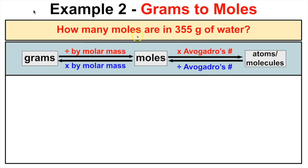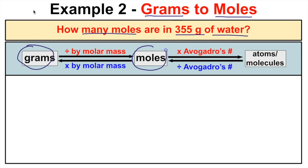In this problem we are going to convert grams to moles. We are asked to figure out how many moles are in 355 grams of water. The known quantity is expressed in grams and we want to figure out how many moles this is. Anytime we know the number of grams and want to figure out moles, we divide by the molar mass. We have 355 grams of water — the chemical formula for water is H₂O.